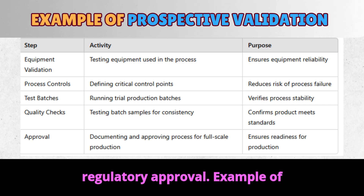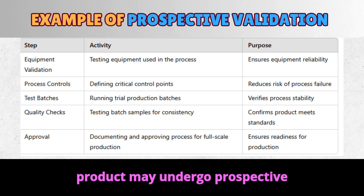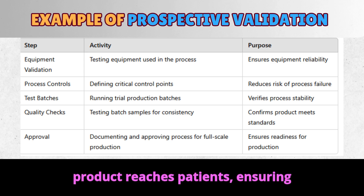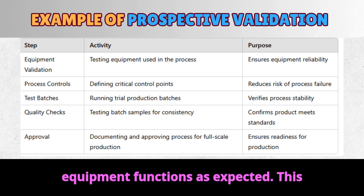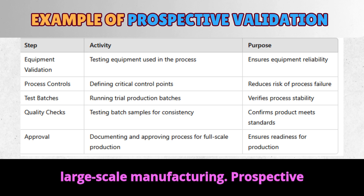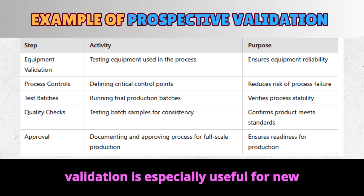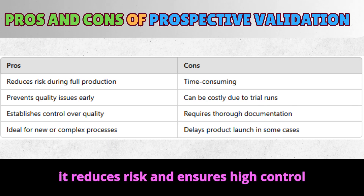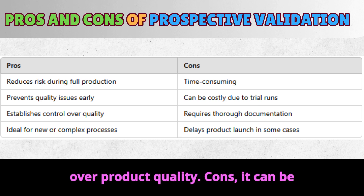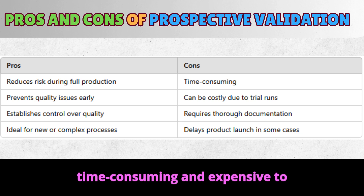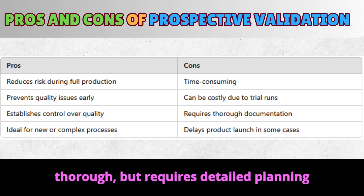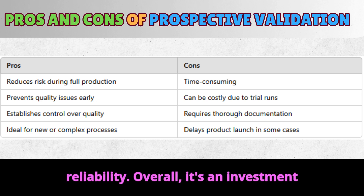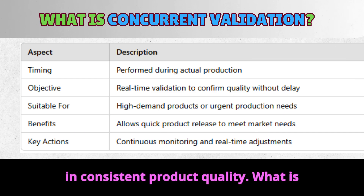Proper documentation is essential for regulatory approval. Pros and cons of prospective validation. Pros: it reduces risk and ensures high control over product quality. Cons: it can be time-consuming and expensive to implement. Prospective validation is thorough but requires detailed planning and resources. The benefits include fewer issues during production and greater reliability. Overall, it's an investment in consistent product quality.